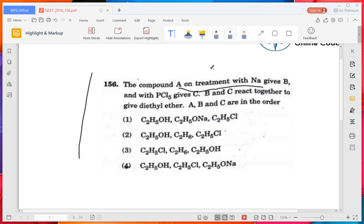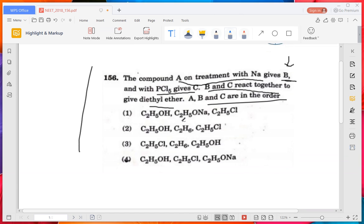B is also one of the mysterious questions. What is B? And when B reacts with C, they react together to form diethyl ether. What is A, B, C in order?